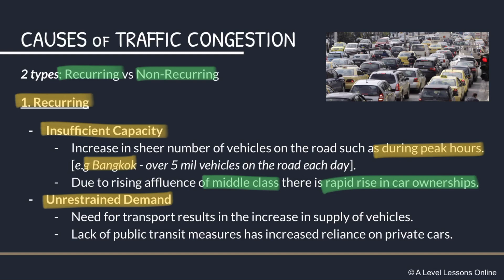The next factor under recurring congestion is unrestrained demand — a need for transport which results in an increase in vehicle supply. This tends to refer to public transport or private hire cars like Grab, Uber, and taxis. When there is a lot of public transit available, this can actually cause increased reliance on private cars, hence causing greater traffic congestion.